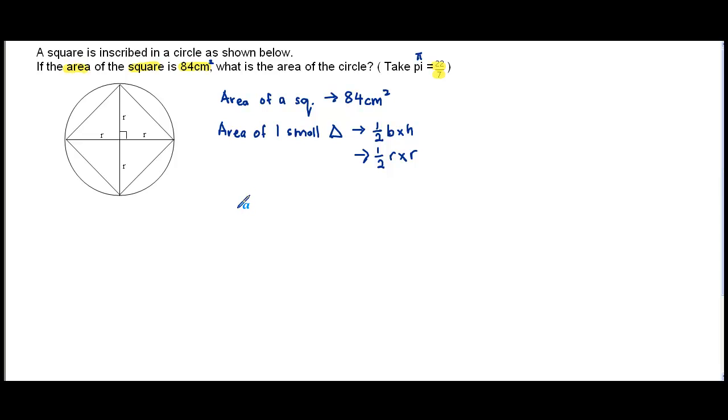In this case, area of one small triangle is actually 84 cm² divided by 4.